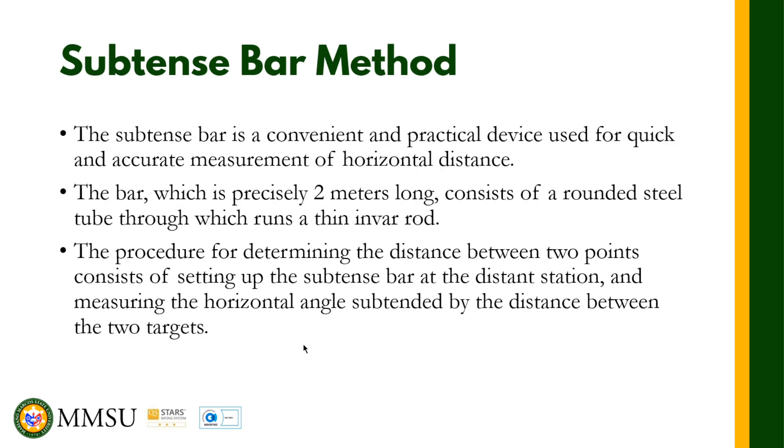The subtense bar is a convenient and practical device used for quick and accurate measurement of horizontal distance. The bar, which is precisely two meters long, consists of a rounded steel tube through which runs a thin invar rod.